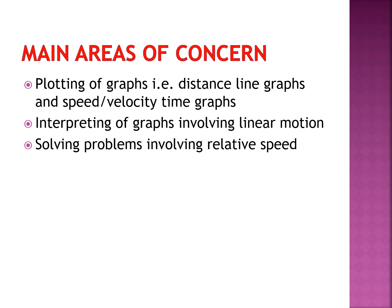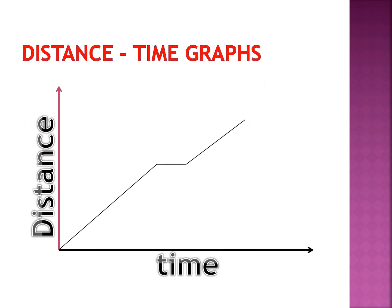The third main area, which is actually an issue, is solving problems involving relative speed. Now, a distance-time graph has distance on the y-axis and time on the x-axis. It always goes up because as time increases, distance also increases. If there is no change in distance but time is still moving, the vehicle has stopped — velocity is zero — and you get a flat line parallel to the x-axis.